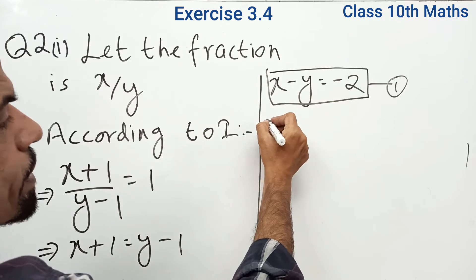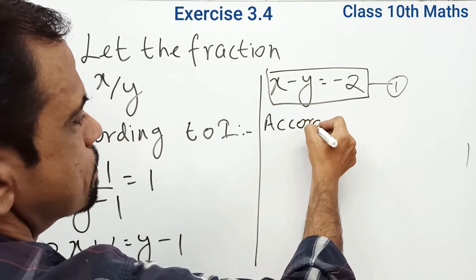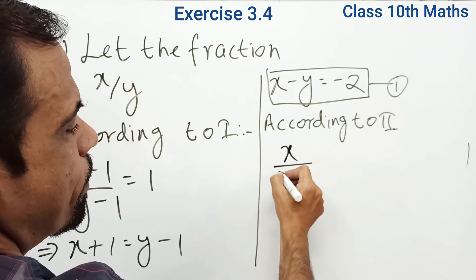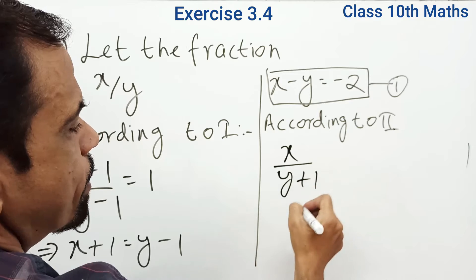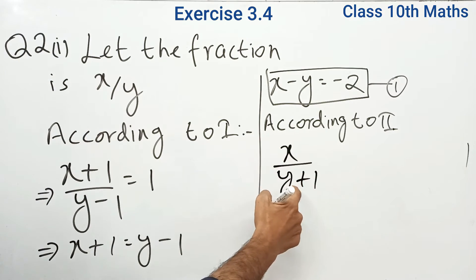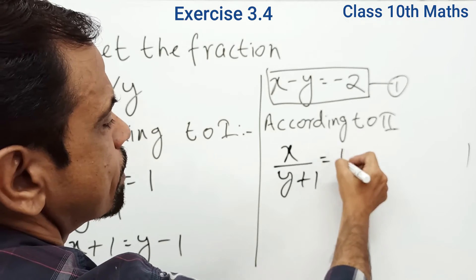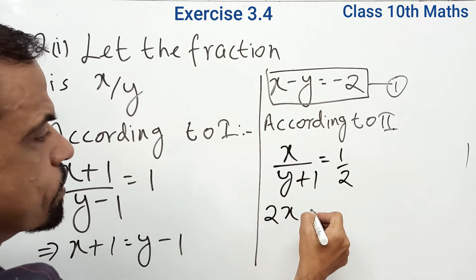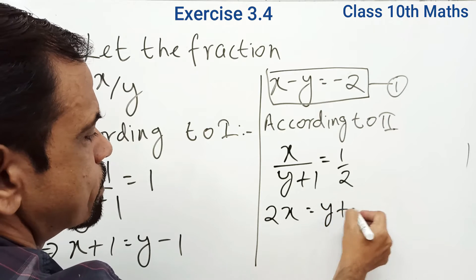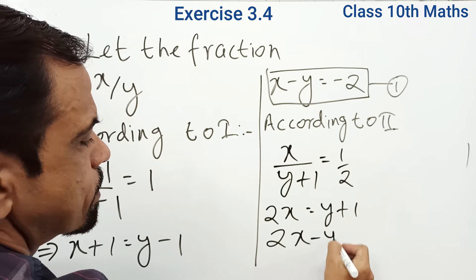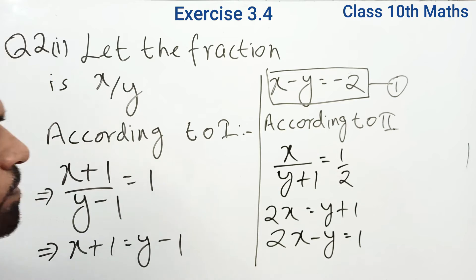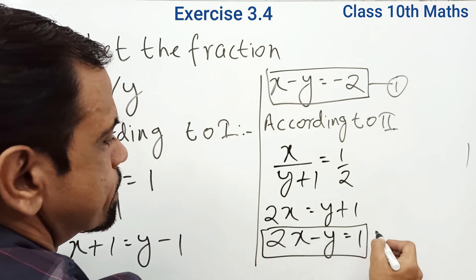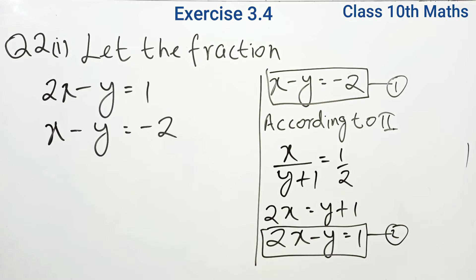Now, the second condition: only 1 is added to the denominator — nothing changes in the numerator. So the fraction becomes x/(y+1) = 1/2. Solving this gives 2x = y + 1, therefore 2x minus y is equal to 1. This is our second equation.